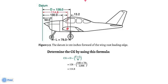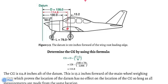Substituting the values: 128 minus open parenthesis 340 times 78, all over 2006, close parenthesis. The answer is 114.8. The CG is 114.8 inches aft of the datum, which is 13.2 inches forward of the main wheel weighing points. This proves the location of the datum has no effect on the location of the CG, so long as all measurements are made from the same location.